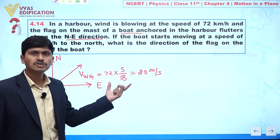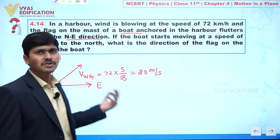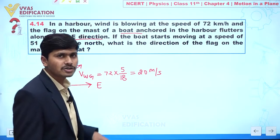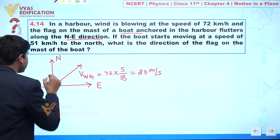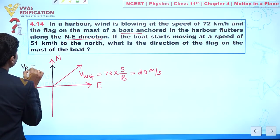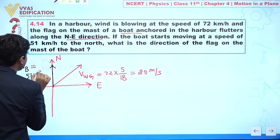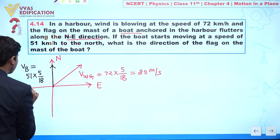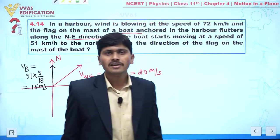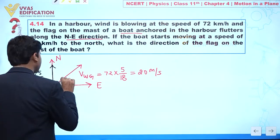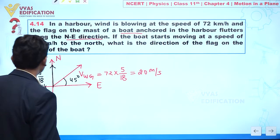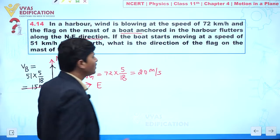Now the boat starts moving at a speed of 51 km/h in the north direction. So V_b equals 51 multiplied by 5/18, which equals 15 meters per second. Initially the flake is in the northeast direction, so this angle is 45 degrees. This is the velocity of the boat with respect to ground.